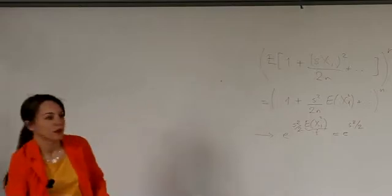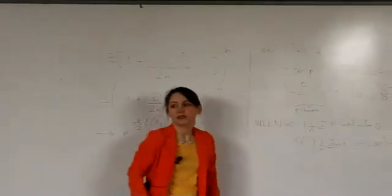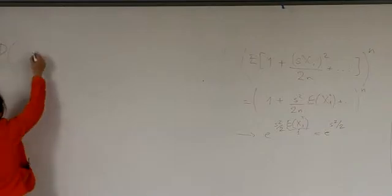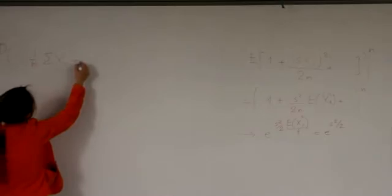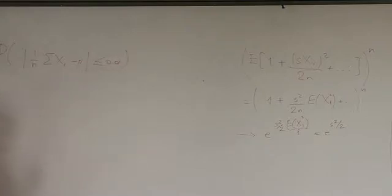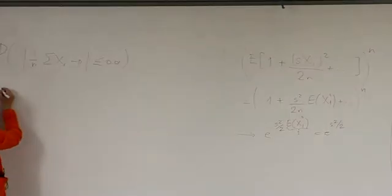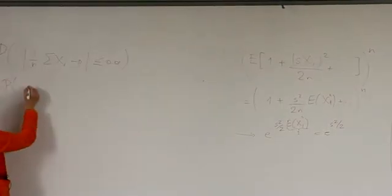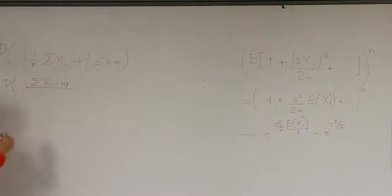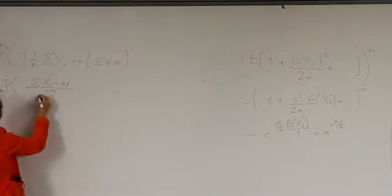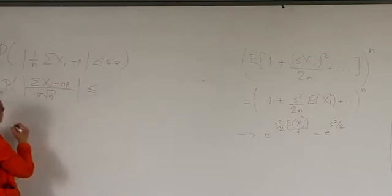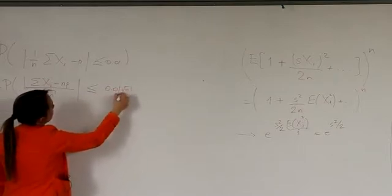I'm going to suppose that my poll result behaves as a Gaussian. This is the probability I need: the probability that 1 over n summation xi minus p is less than or equal to 0.01. Now I can rewrite this as the probability that summation xi minus np, by multiplying, divided by sigma square root of n, is less than or equal to 0.01 square root of n divided by sigma.